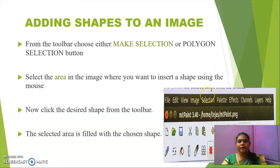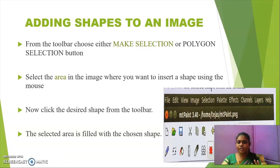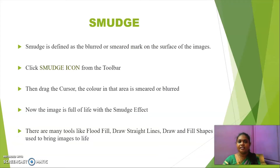Now we are going to add shapes to an image. To add a shape, we have to choose either the Make Selection or Polygon Selection button, then select the area in the image where you want to insert a shape using the mouse. This is similar to cropping — you use the Make Selection icon to select the required portion. A shape can be anything: a square, rectangle, line, etc. Then click the desired shape from the toolbar to insert it in that selected area. This is how we add shapes to an image.